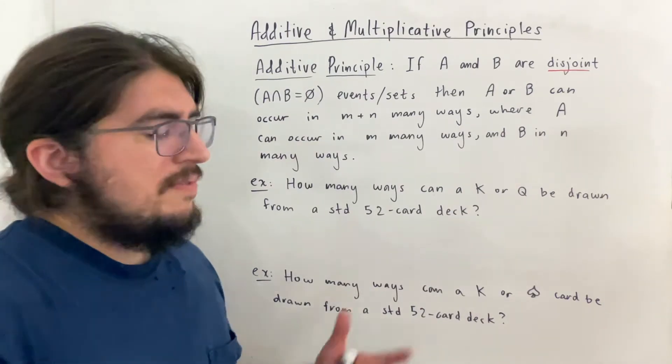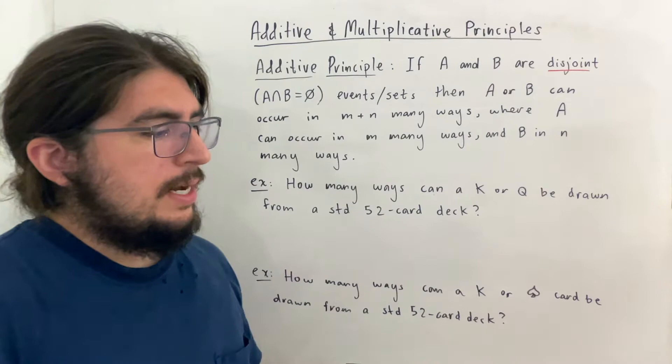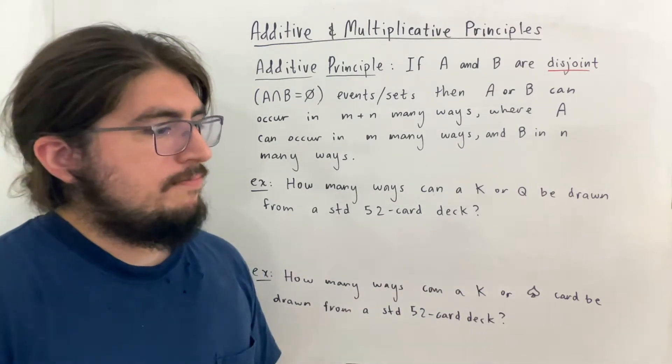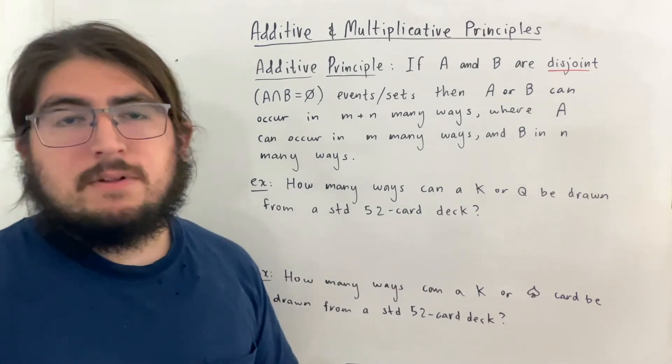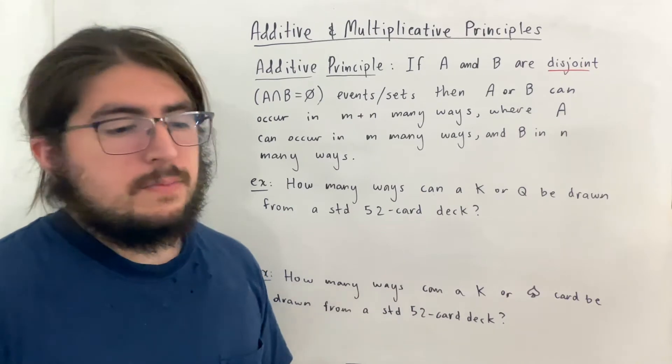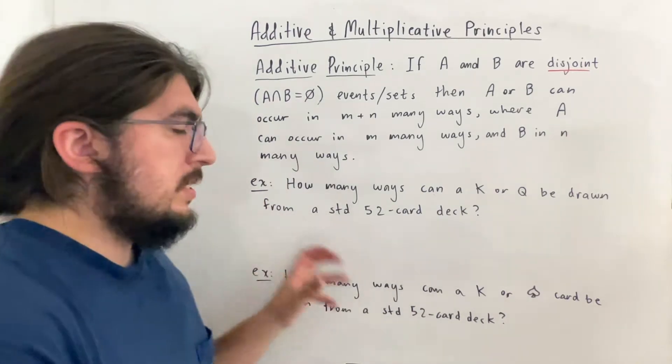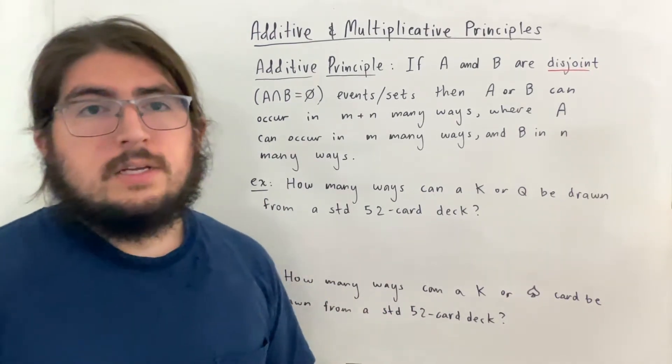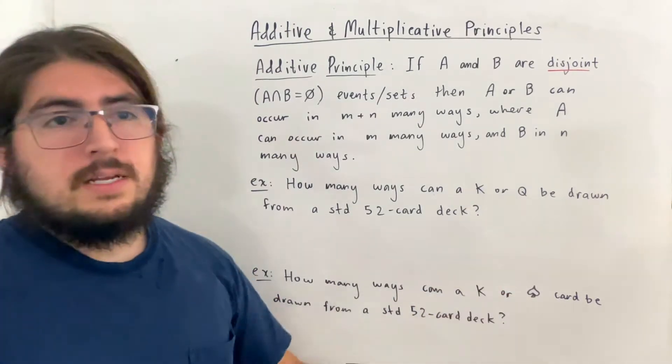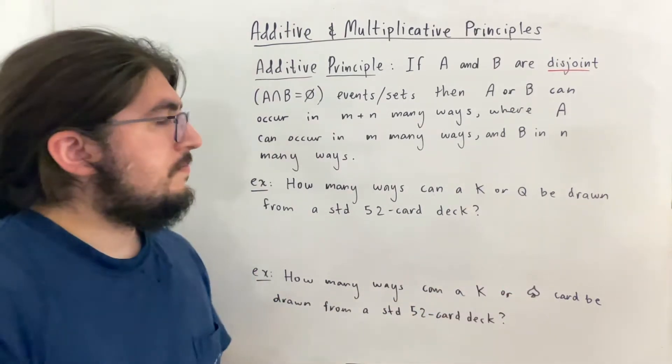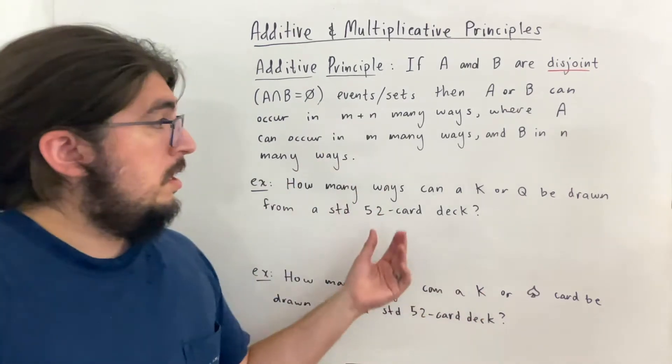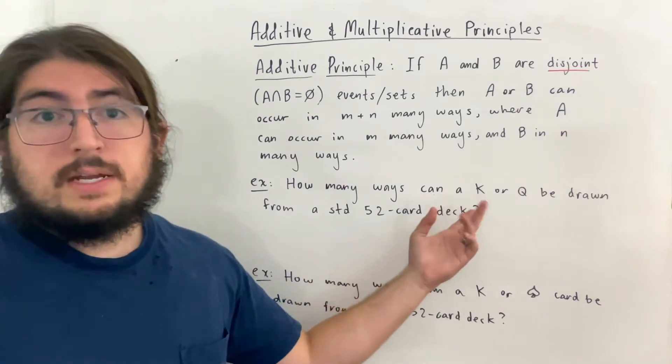Just to emphasize, this word disjoint, I referred to this before as mutually exclusive. It means they share no common event or element if they're sets. So sets and events are kind of used almost in the same light here. An event, for example, could be that a car is red or something like that, or an animal is a dog. It depends on the context of the problem.